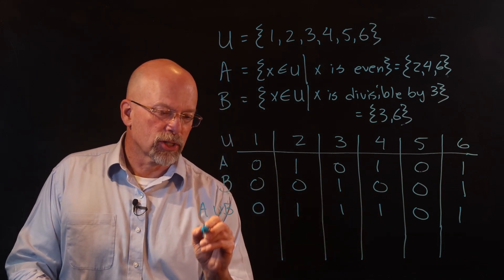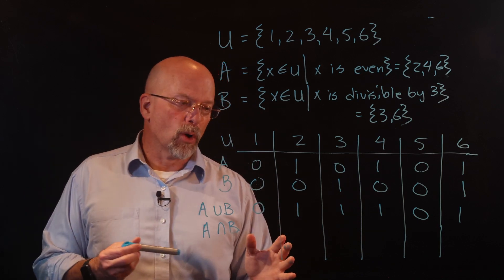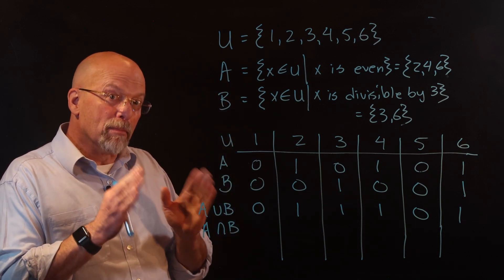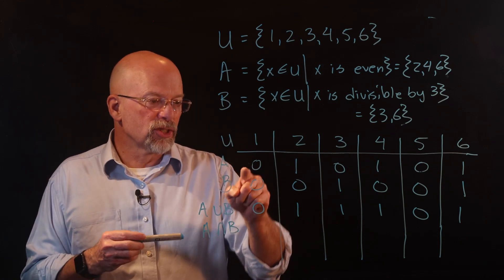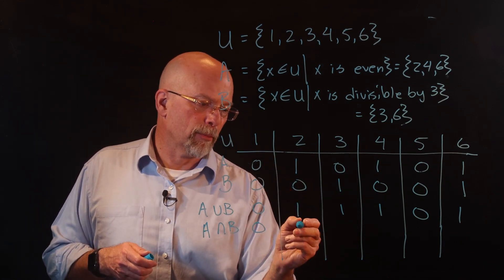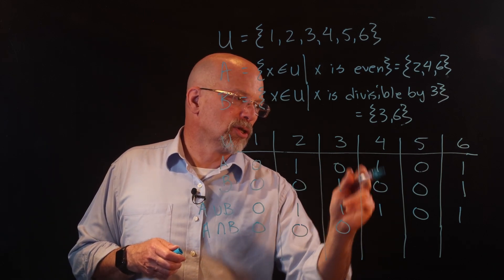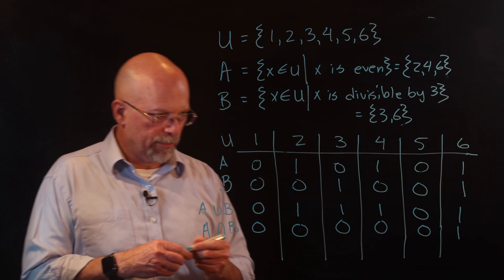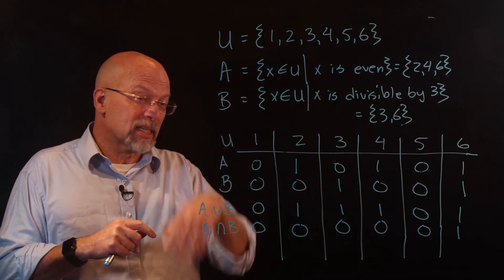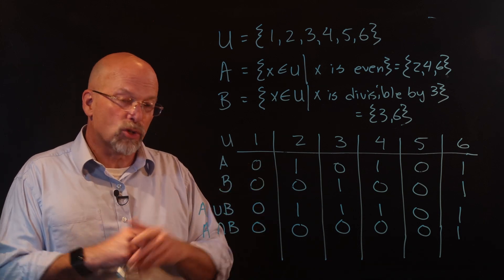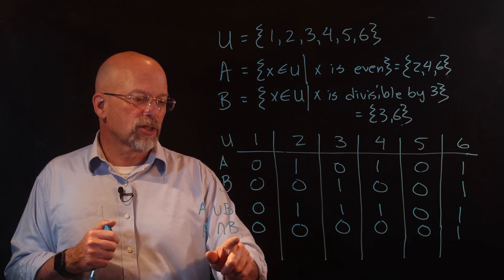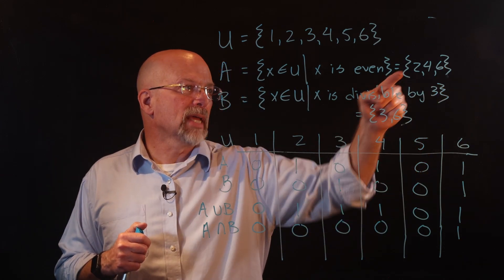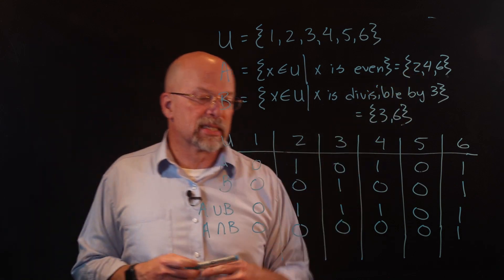Now what about the intersection? The intersection requires that both A and B have ones at that corresponding position. If there's at least one zero in that column, the result is zero. Position three has a zero in A; position four has a zero in B; there are no ones at all for position five; but there are two ones for position six. So the intersection of A and B contains just {6}, which matches — the only element in both sets is six.